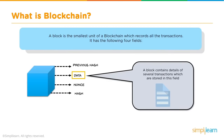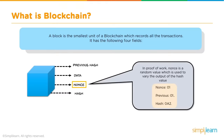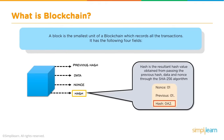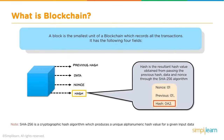The nonce is the parameter used to generate the hash value, and proof of work is the process of transaction verification done in blockchain. The hash is the digital signature and identity of the block, generated by passing the previous hash, data, and nonce through the SHA-256 algorithm. SHA-256 is a cryptographic hash algorithm that produces a unique 256-bit alphanumeric hash value for any given input — whatever input you give, it always produces a 256-bit hash.